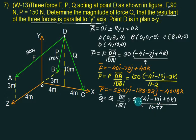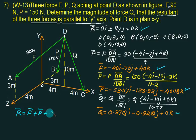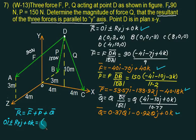Now divide each component by 10.77 in terms of Q. The resultant is given by R̄ = F̄ + P̄ + Q̄. We have three forces: 1, 2, 3. R̄ = 0·I, maybe plus or minus Ry·J, plus 0·K. Now we will collect the coefficients of I, J, K one by one from all three forces.